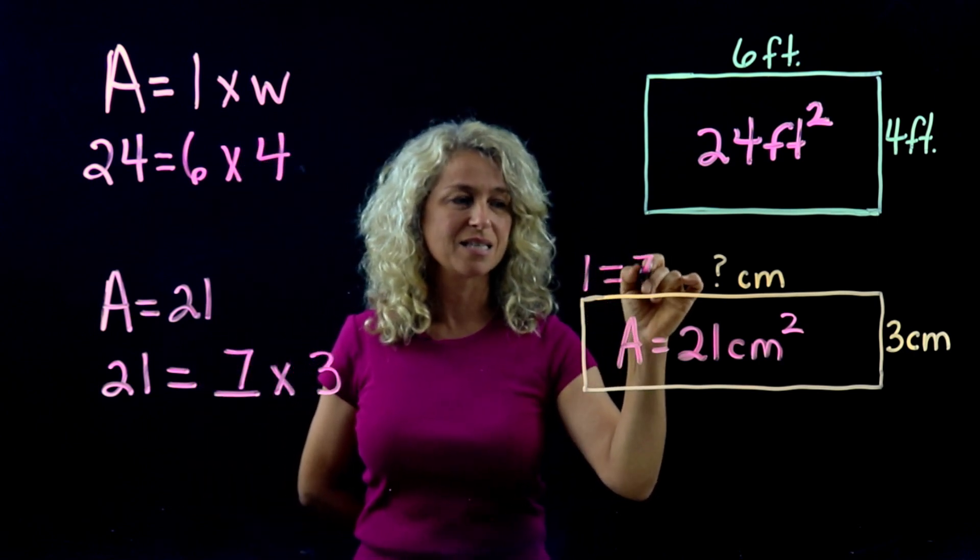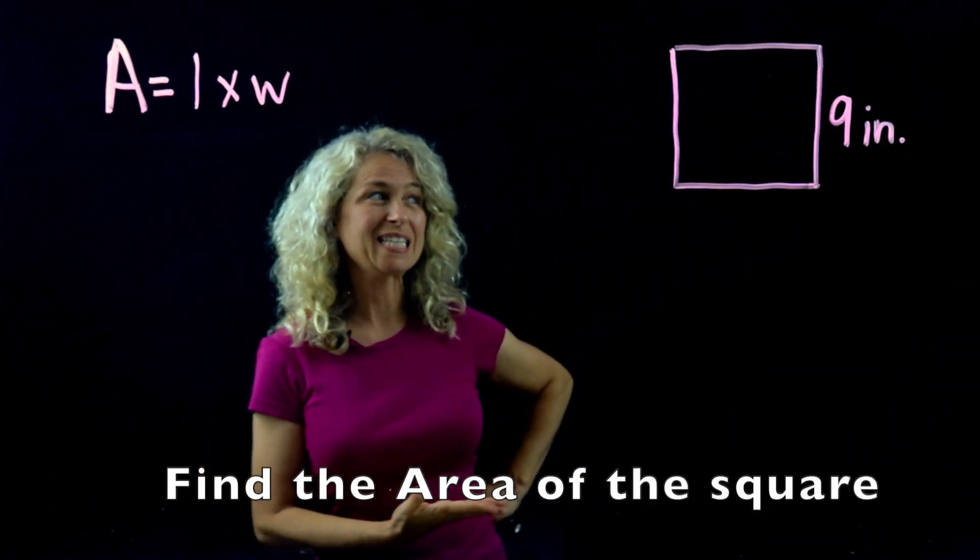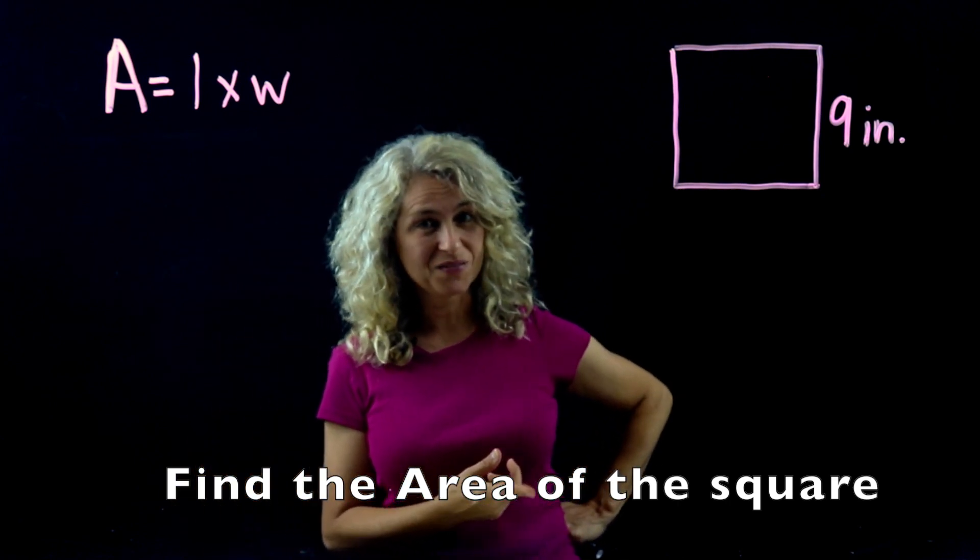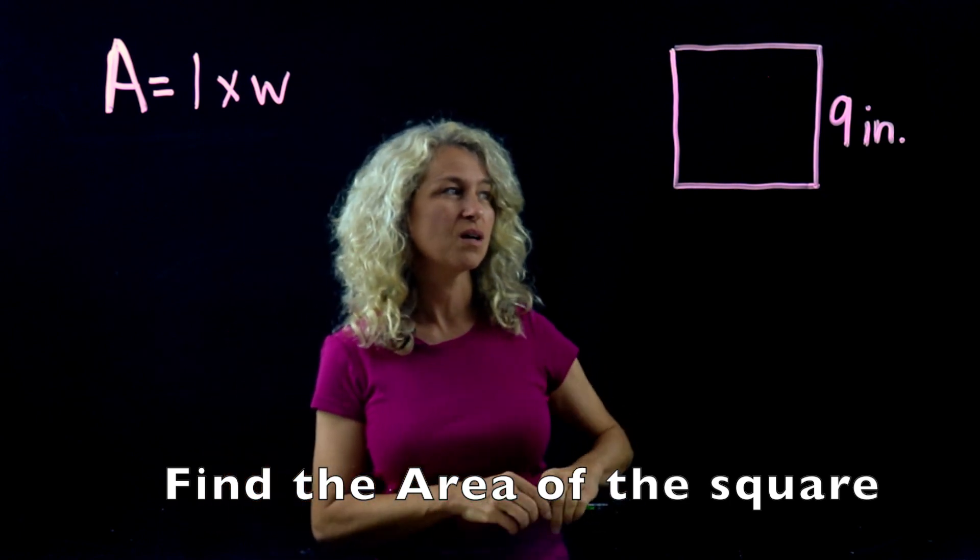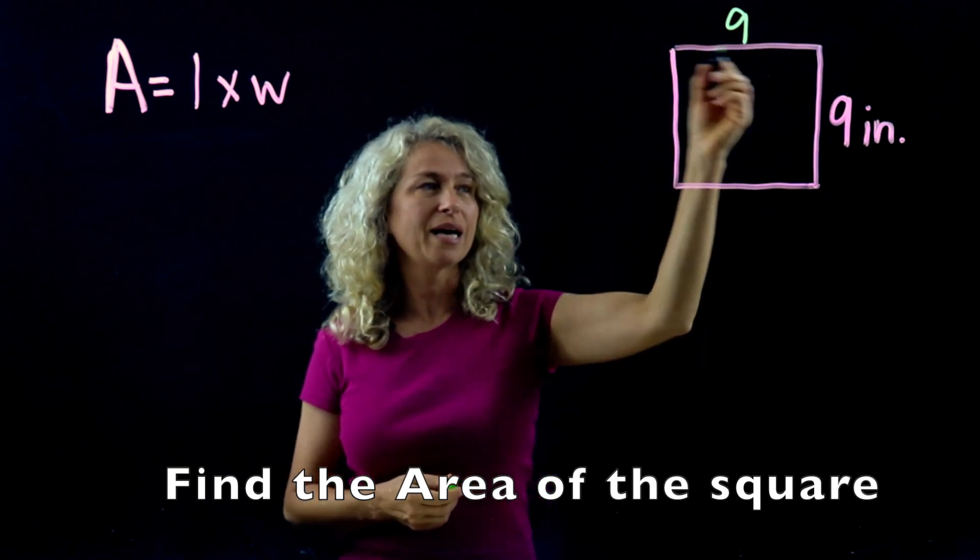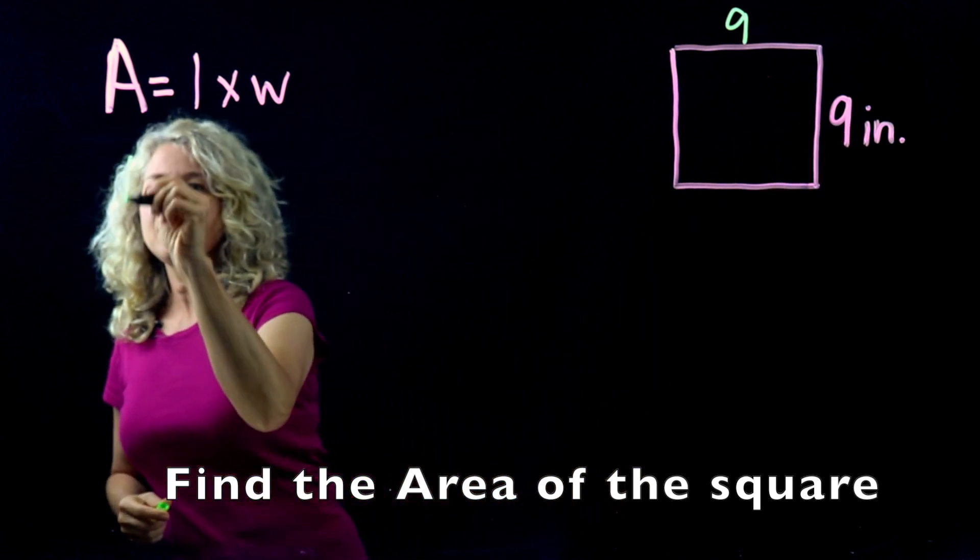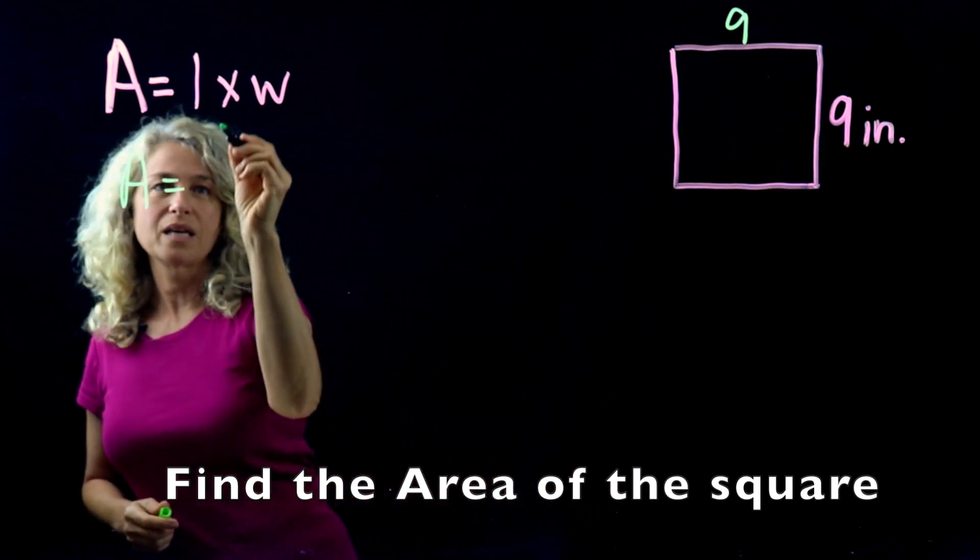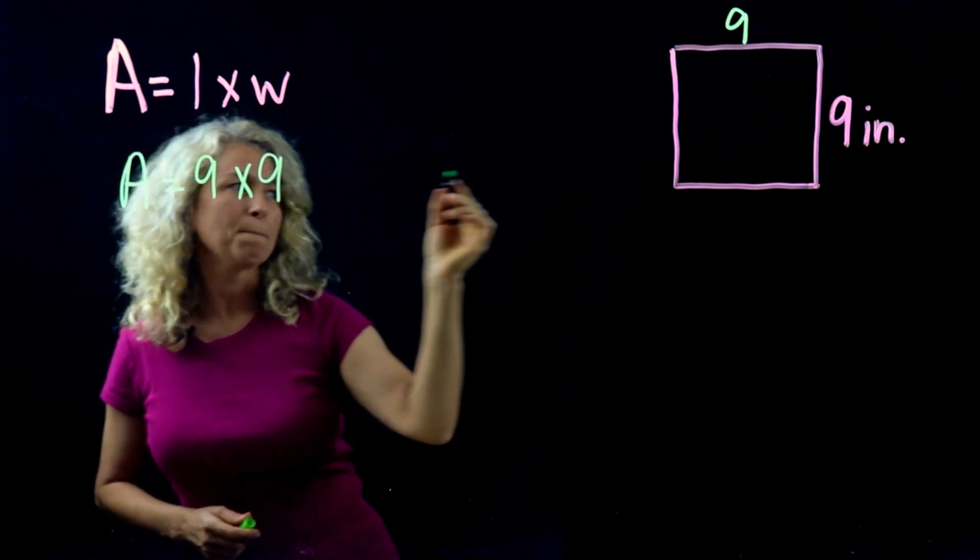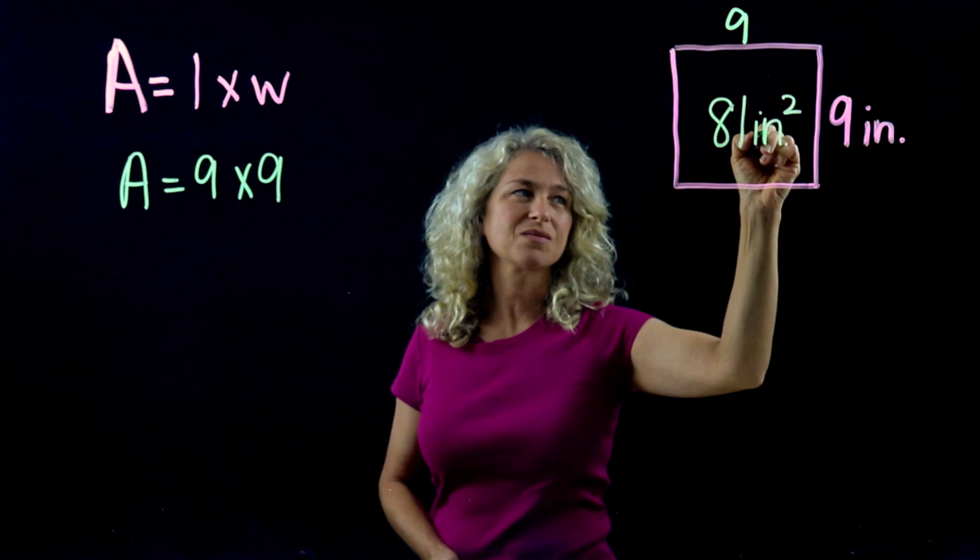All right, so notice that this we are told that this is a square. And so what do we know about a square? All sides are equal. All right, so if all sides are equal, you know that each one would be 9. We only need two dimensions, right? So we need area equals a length and a width: 9 times 9. So our area is going to be 81 inches squared.